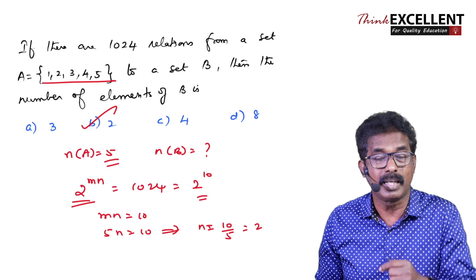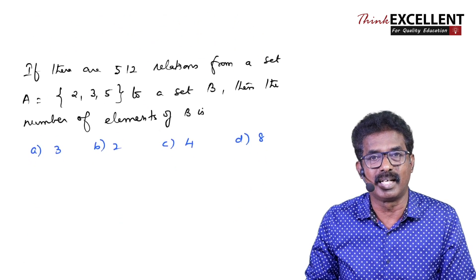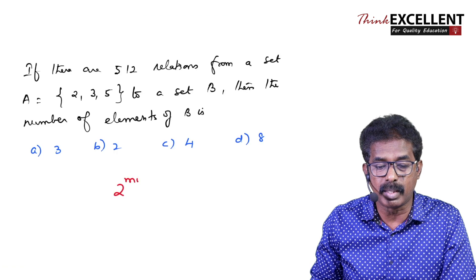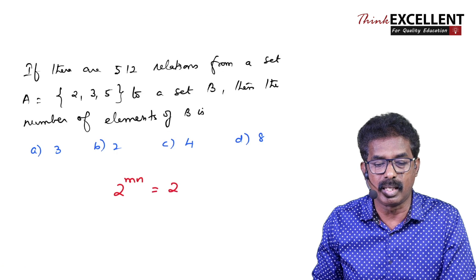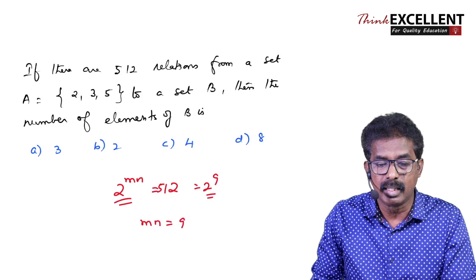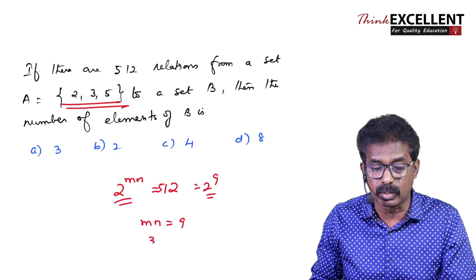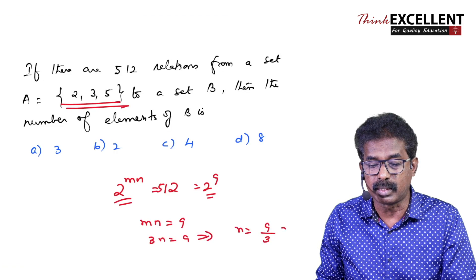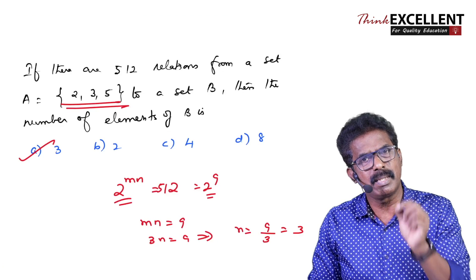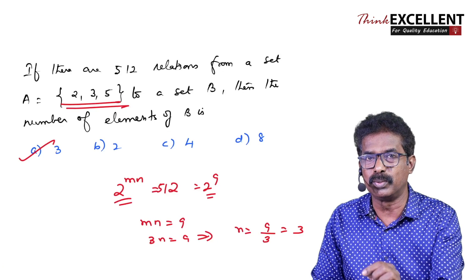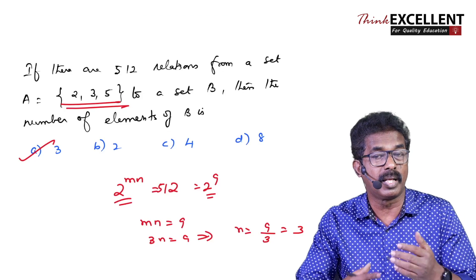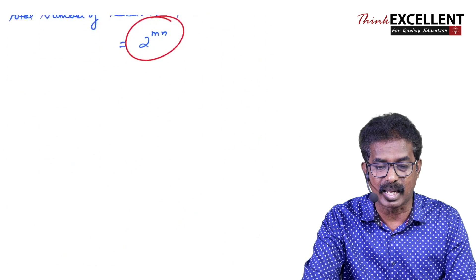Now see what is the answer for this question: there are 512 relations from set A to set B. So 2 raised to MN = 512 = 2 raised to 9, so MN = 9. The number of elements in A is 3, so 3N = 9, N = 3. The answer is 3. So if you understand and learn like this, you can do even the two-mark compulsory and creative questions. Discuss every topic and every chapter in the live class — so don't miss that live session.